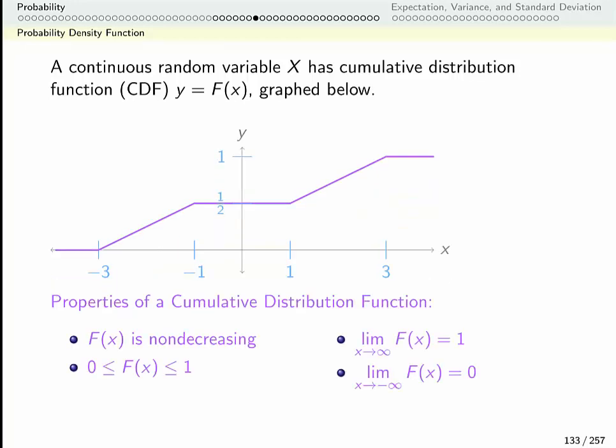So let's remember what cumulative distribution functions should look like. They should be non-decreasing. That's the cumulative bit. They're a probability, so they should always be between 0 and 1. The limit as we go to the left should be 0 and the limit as we go to the right should be 1.